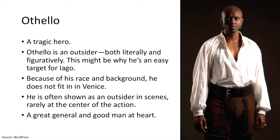In the play we learn that Othello is an outsider, both literally in terms of his appearance — he's a Moor, of African descent — but also figuratively. That's why he's an easy target for Iago. Even though he commands Iago, Iago is still able to trigger many of his insecurities, which leads to his downfall. Because of his race and background, he does not fit in in Venice and is rarely at the centre of the action. However, he's also shown to be a great general and a good man at heart.